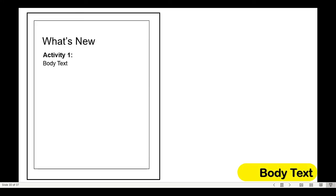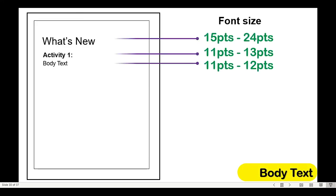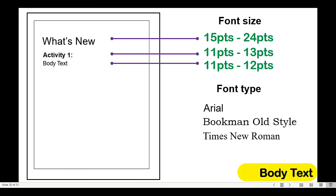Talking about the body text, the heading's font size ranges from 15 to 24 points, subheading 11 to 13 points, and body text 11 to 12 points. You can only use three font types prescribed. These are Arial, Bookman Old Style, and Times to Romance.